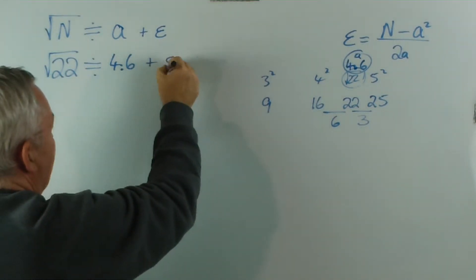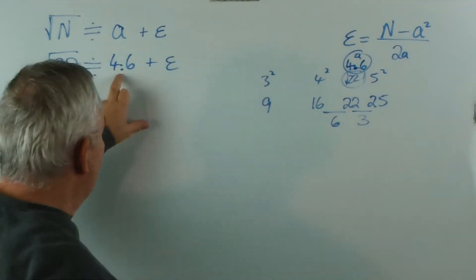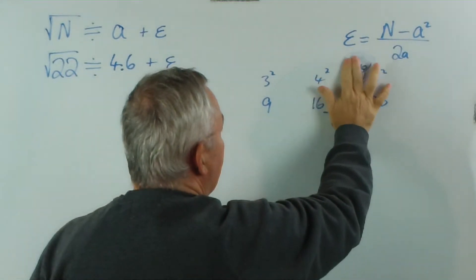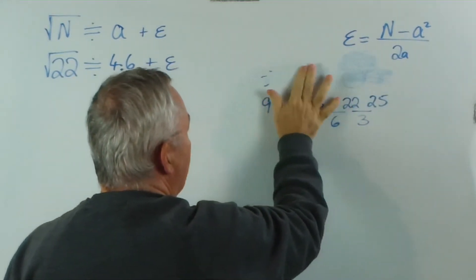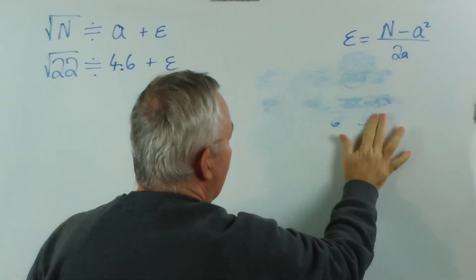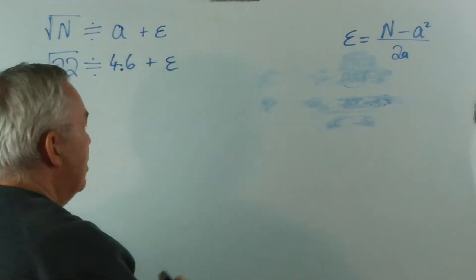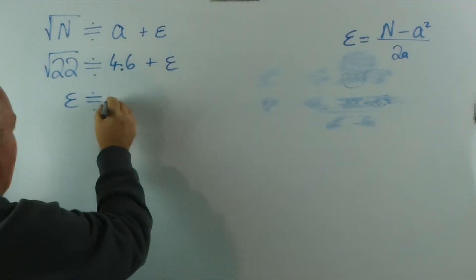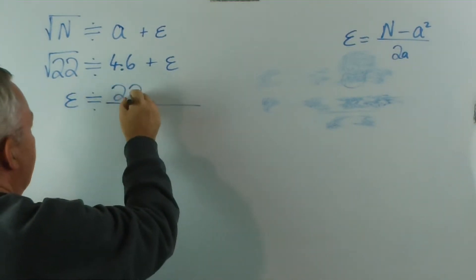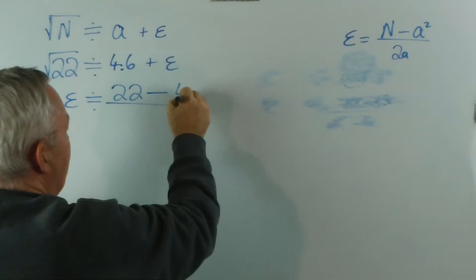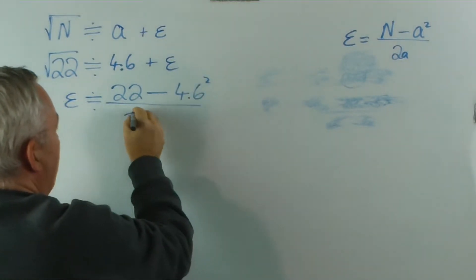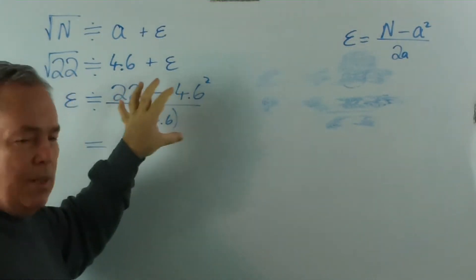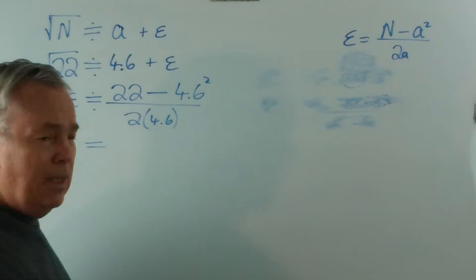Now we're going to add an adjustment factor to improve on this. We're going to find it using this method. I'm going to get rid of this, we're going to need this area of the board shortly. Let's find the adjustment factor. It's approximately our number, 22, minus our approximation, 4.6 squared, over 2 times the 4.6. You can see that this is a little bit laborious.